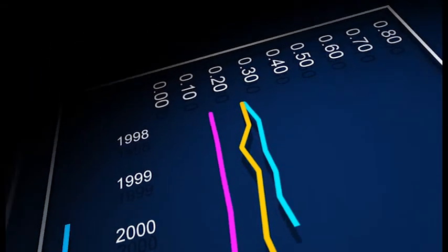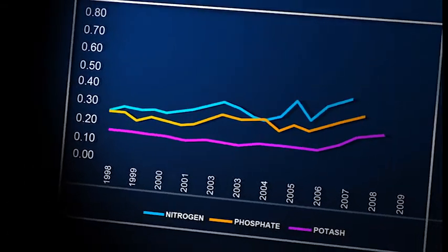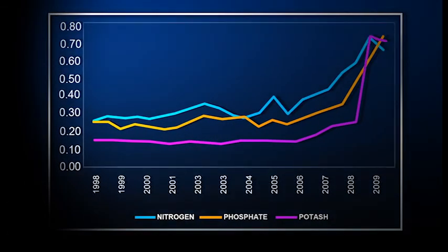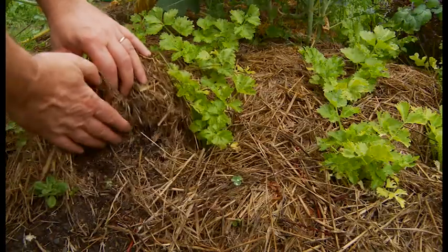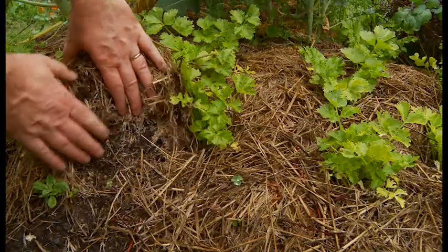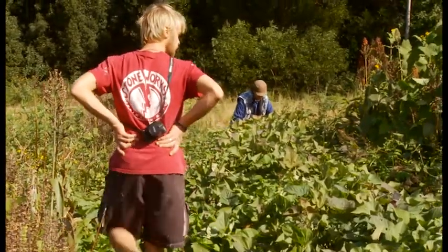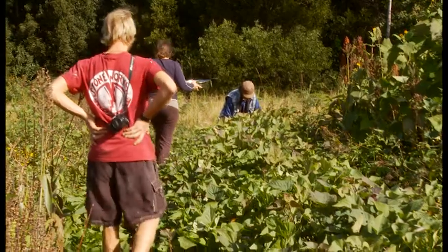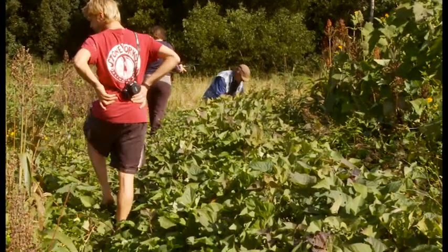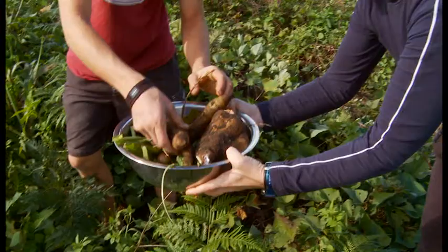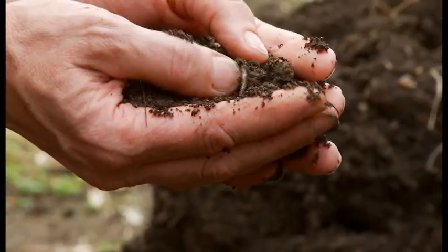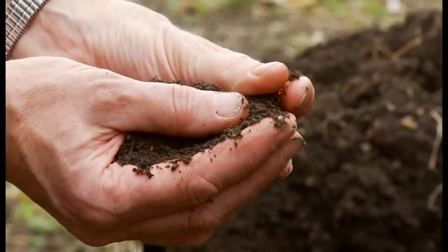The costs of industrial agriculture are continuously rising and continue to rise. Whereas with our organic and designed ecosystemic systems, our costs are dropping all the time, the quality of our product is rising, and so is the quality of our soil.